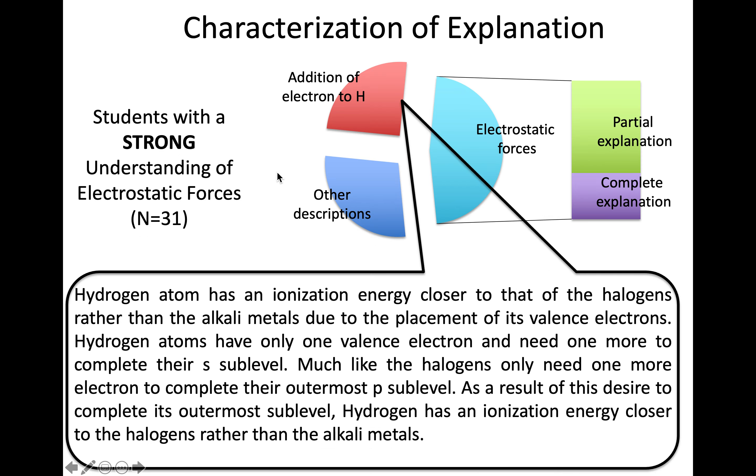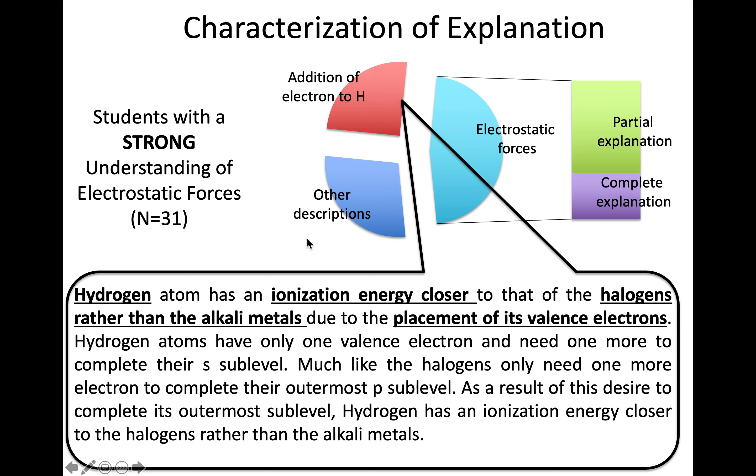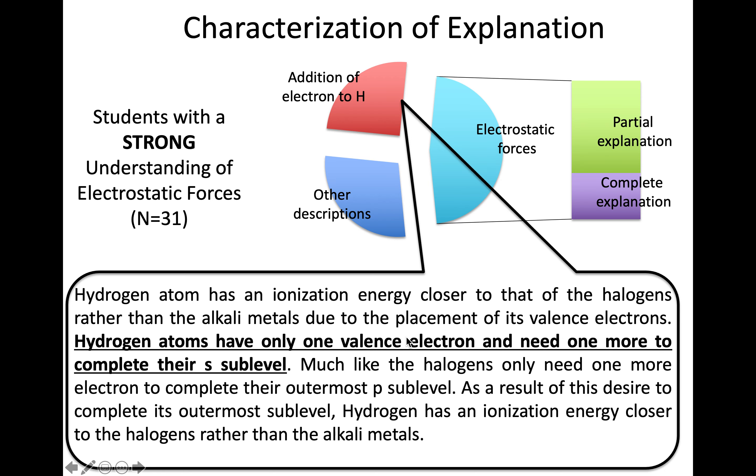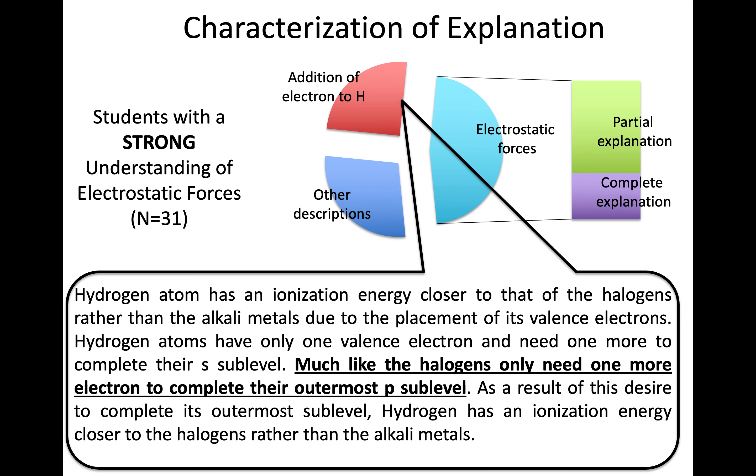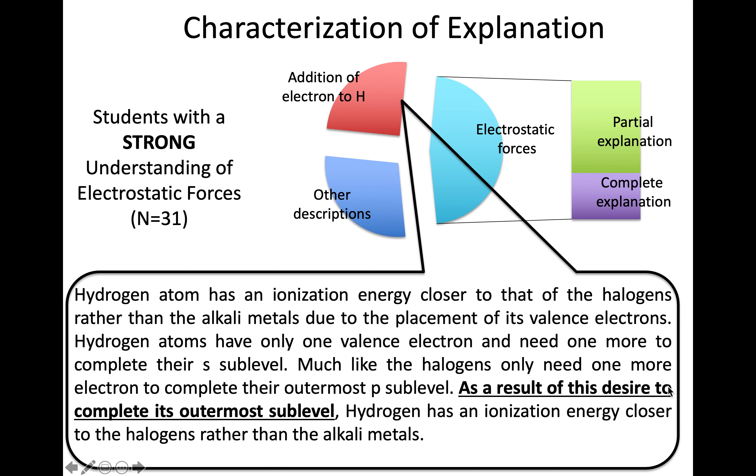These same students with a strong understanding of electrostatic forces also found compelling at times the idea of adding an electron. In this description, we see it's all about the valence electrons—the need to add just one more electron to complete that S sublevel. This was similar to the pattern they saw for halogens as well, expressed as a desire to complete that outermost level.